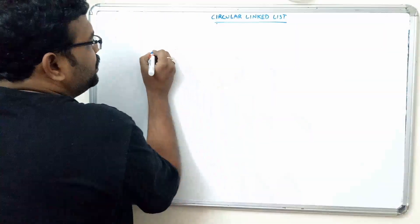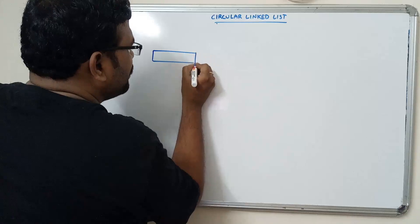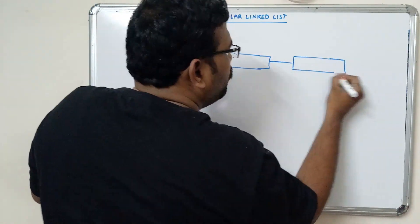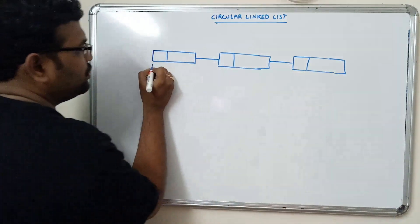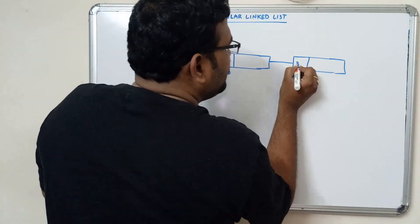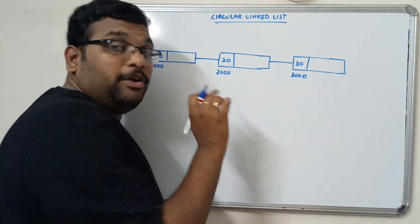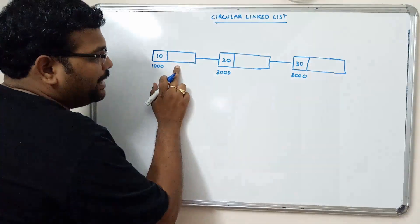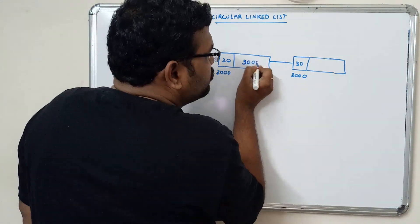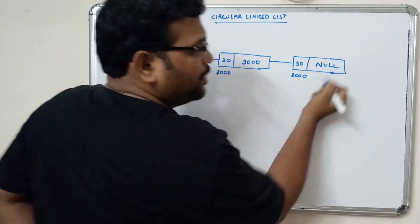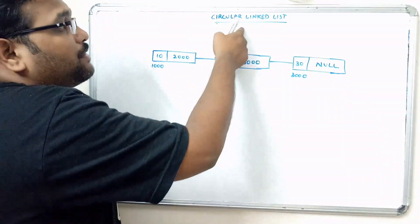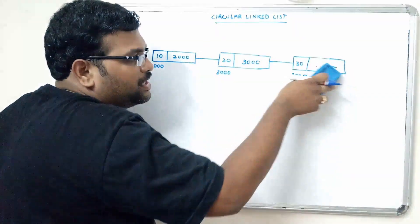Let me explain with three elements. Consider three nodes at addresses 1000, 2000, and 3000, storing data 10, 20, and 30. In a single linked list, the address field of the first node holds 2000, the second holds 3000, and the last node holds null because it is the last node.